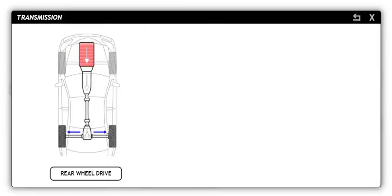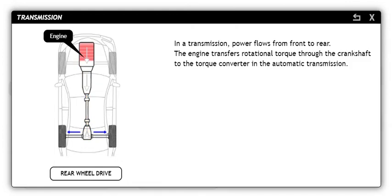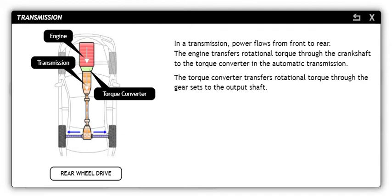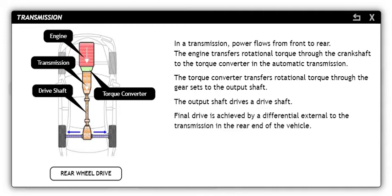In a transmission, power flows from front to rear. The engine transfers rotational torque through the crankshaft to the torque converter in the automatic transmission. The torque converter transfers rotational torque through the gear sets to the output shaft. The output shaft drives a driveshaft, and final drive is achieved by a differential external to the transmission in the rear end of the vehicle.